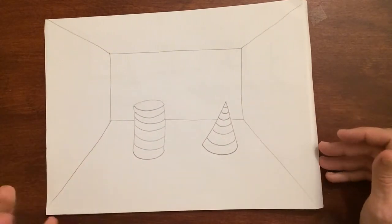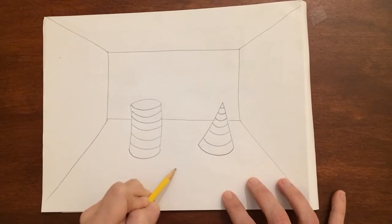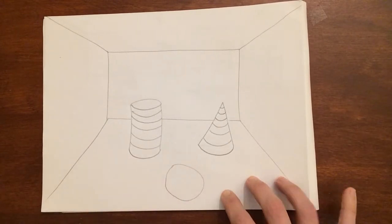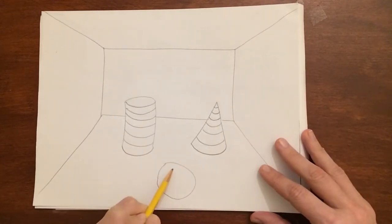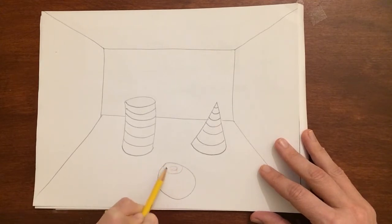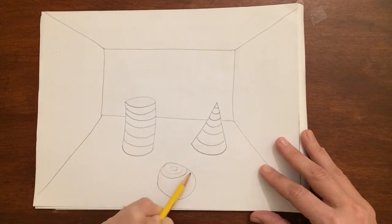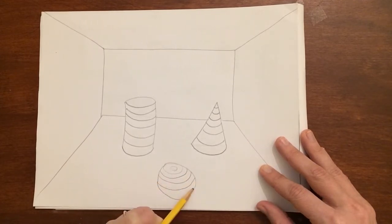Alright, so I've got those two things there and maybe I'll add a sphere here which starts as a circle and I'm going to add some curved lines here.